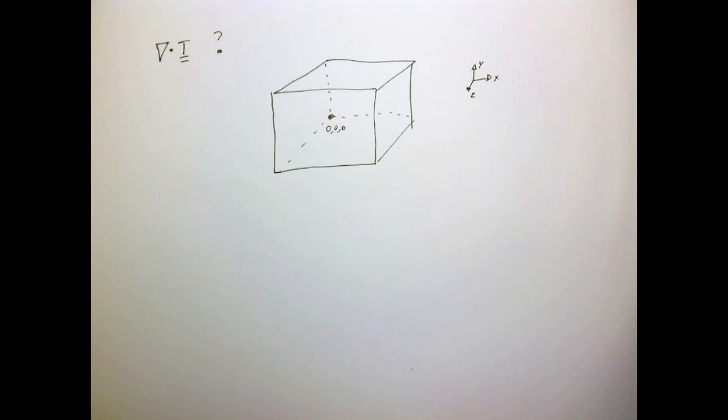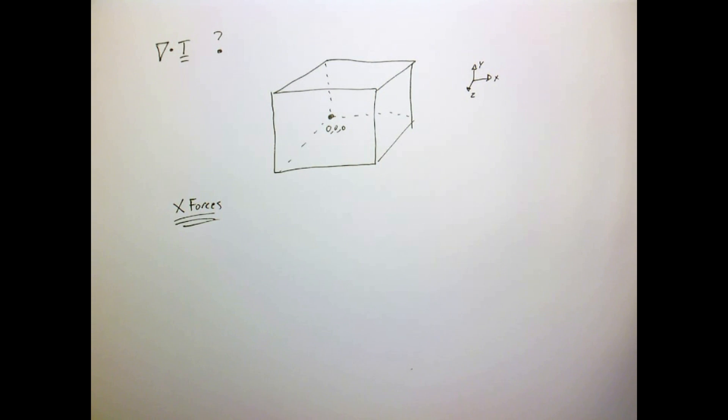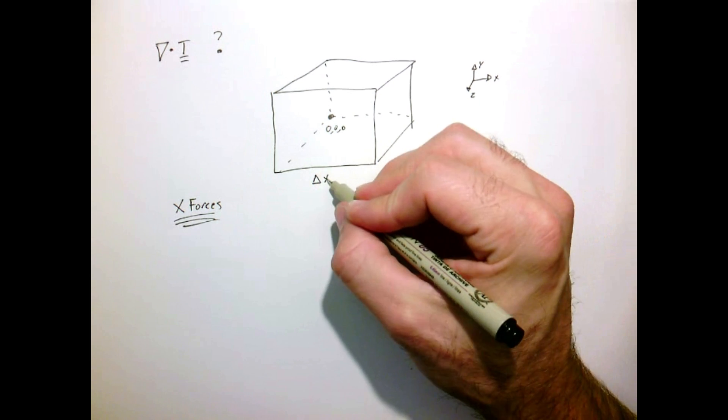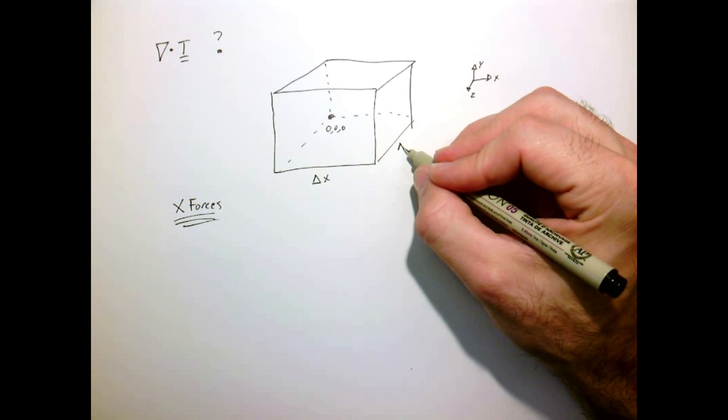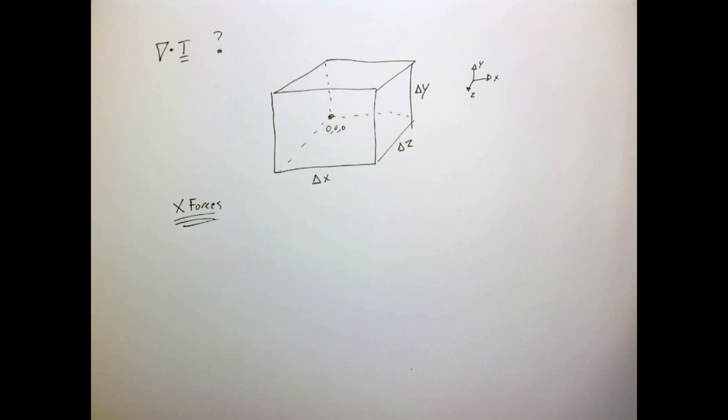And now let's just draw the x-forces. So let's just consider the x-forces. Each face of this cube, we're gonna have some force, but we're gonna consider it to be sort of finite in size, and then we'll take the limit as that size goes to zero. So there's delta x, delta z, delta y.